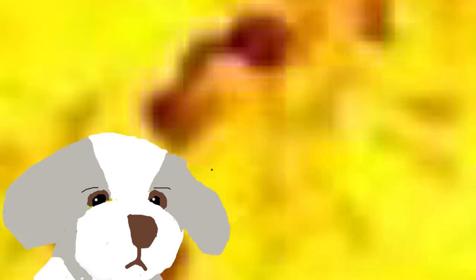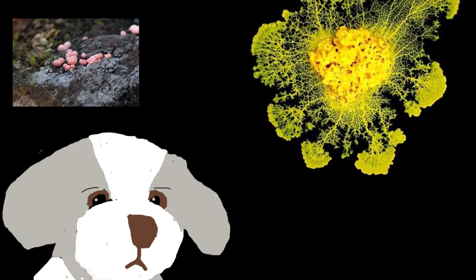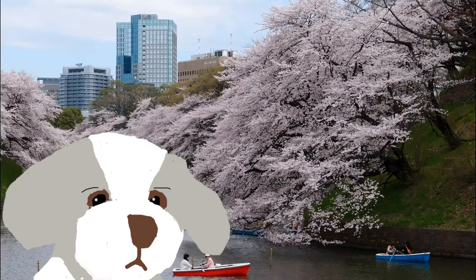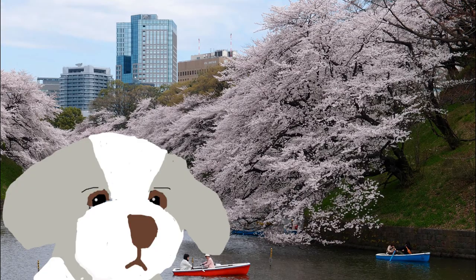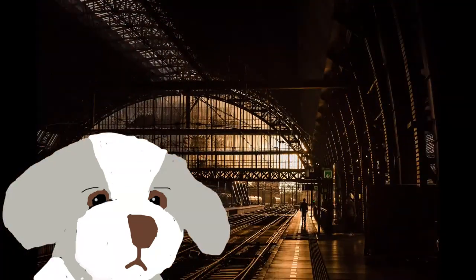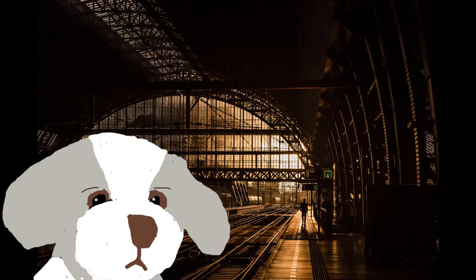Une autre étude a démontré que Physarum polycephalum pouvait résoudre des problèmes complexes mettant en jeu plus de sources de nourriture. Pour ce faire, les chercheurs ont déposé l'organisme sur une surface où étaient dispersés des points de nourriture représentant les différentes villes de la région de Tokyo. Physarum polycephalum a ainsi créé un réseau optimisé entre les sources de nourriture en reliant de la manière la plus efficace les différentes stations. Il a démontré que le réseau était similaire et au moins aussi efficace que le réseau ferroviaire de Tokyo.